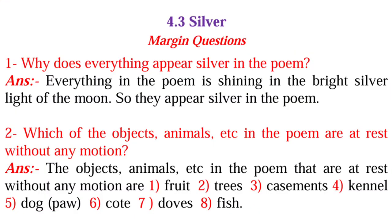Now we will start the margin questions. The first margin question is: why does everything appear silver in the poem? The answer is, everything in the poem is shining in the bright silver light of the moon, so they appear silver in the poem.